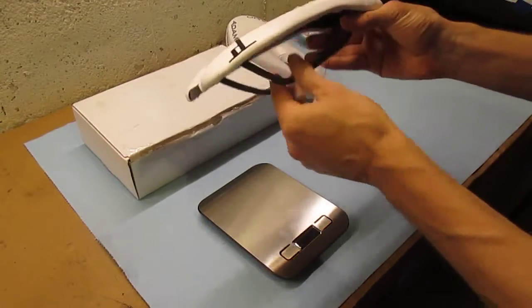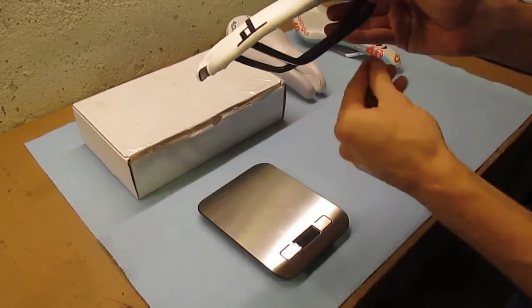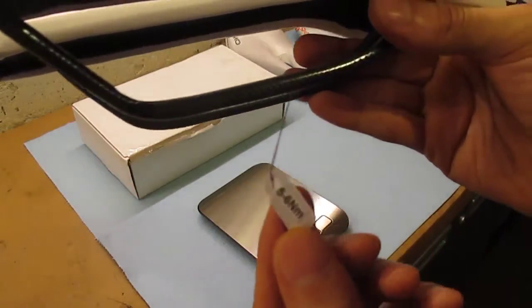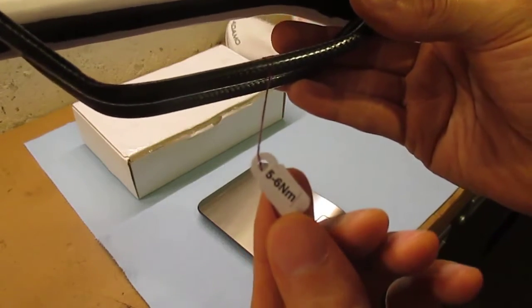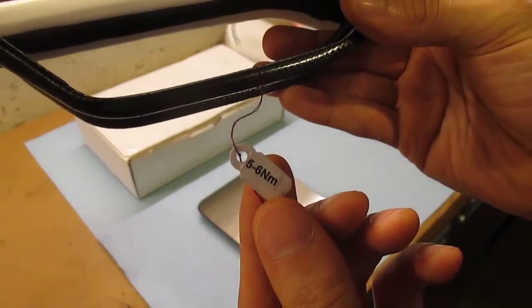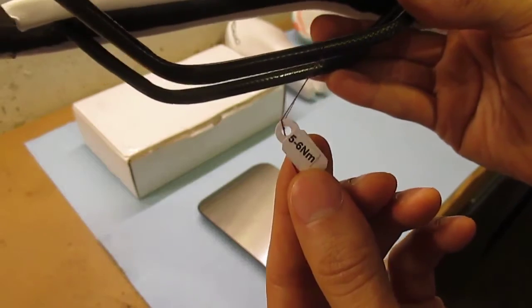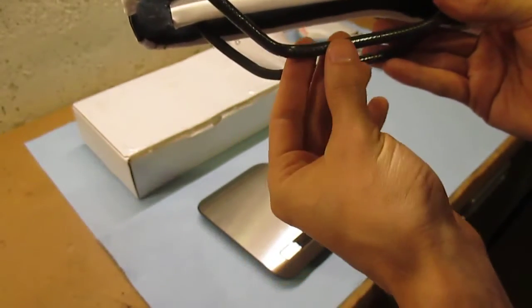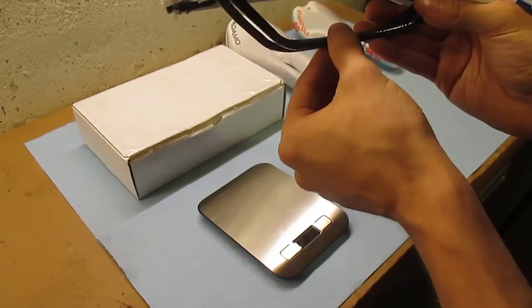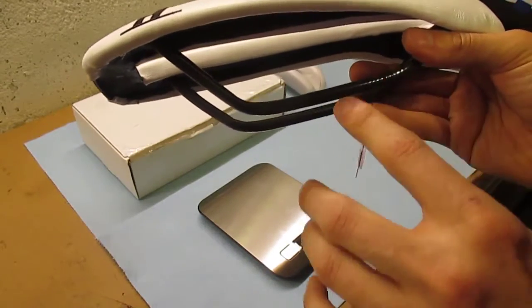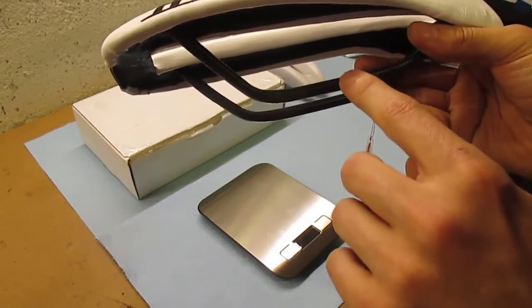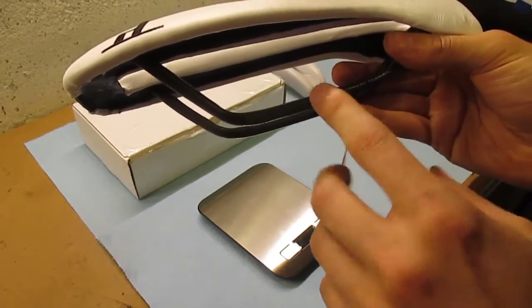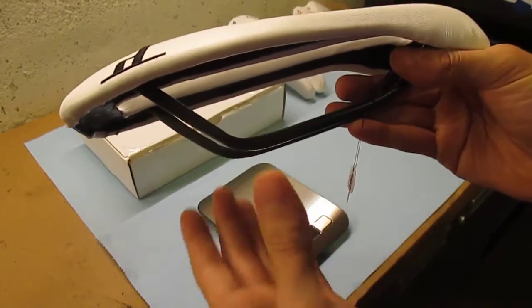When I took the saddle out of the bag, it did have this tag on it that says 5 to 6 newton meters. It's just a warning so you don't over-tighten these carbon rails. These carbon rails happen to be 7mm round carbon rails, which is your standard rail size.